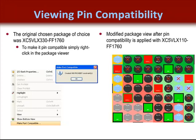Pinahead also has a pin compatibility utility that allows you to facilitate the migration of a design between two density components that are supported with the same package. This is often done when designs are tested on a prototyping board that supports a large density and then migrates to a smaller device for shipping. In this example, a Vertex 5 design is migrating between an LX330 density and an LX110 density. To facilitate the migration, the pin compatibility utility is called upon to prevent IO pins from being used that are not an exact match between the two devices.